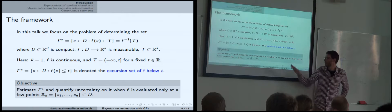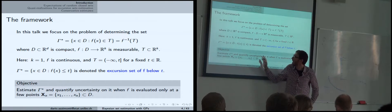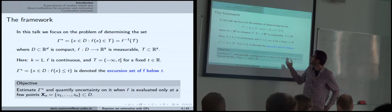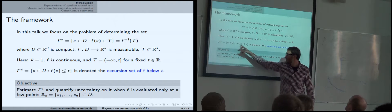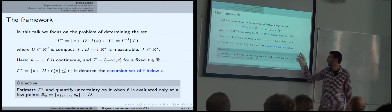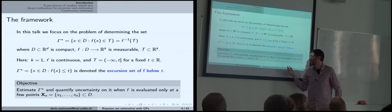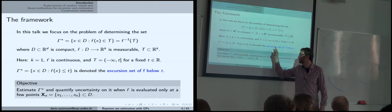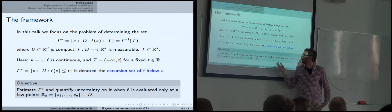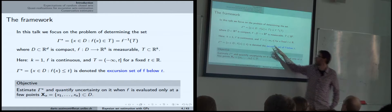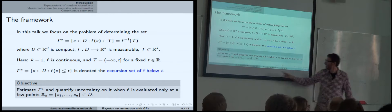First I'll stay with this static design — one fixed design. What we are interested in is recovering this type of set. Throughout the talk I'll use this specific set: an excursion set of f below t. This is easily extendable to unions of closed intervals, and some methods can be extended to multivariate output functions where k is greater than 1, but for this talk I'll stick with k equals 1 and this type of set.